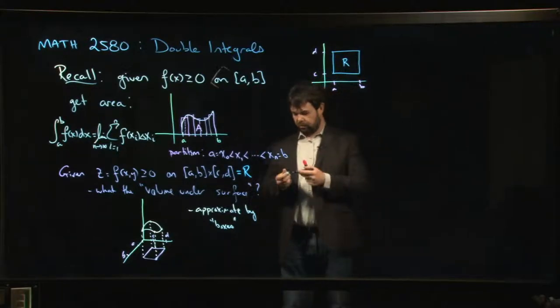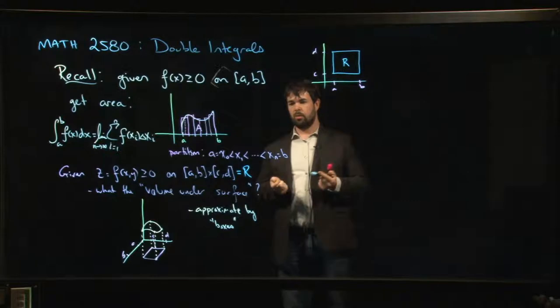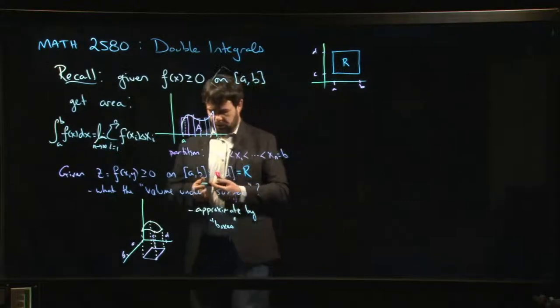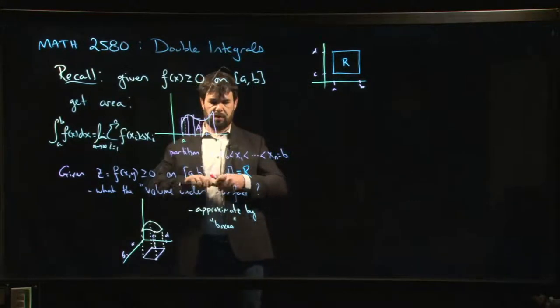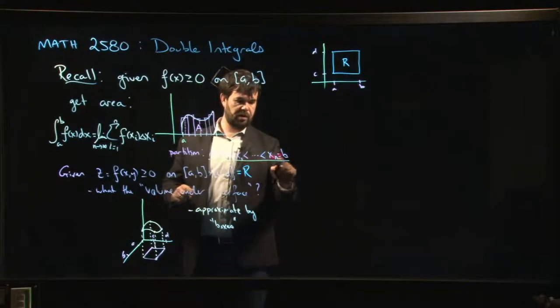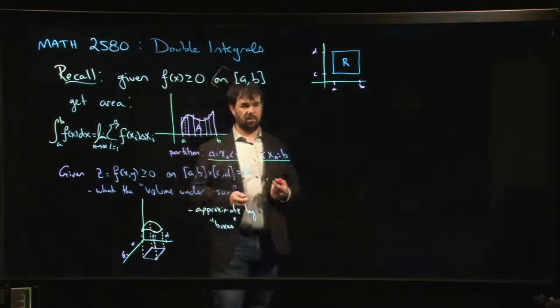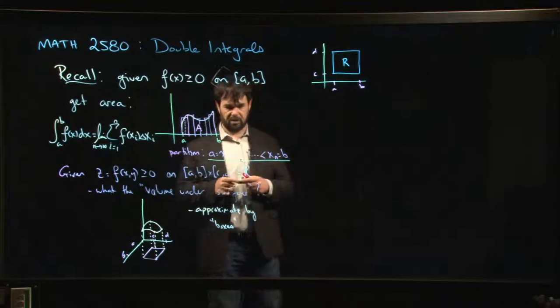And we say, okay, how do we do this approximation by boxes? Well, we do what we know. And what we know is we know how to do these partitions. So we've already sort of partitioned this x interval, A going from A to B.